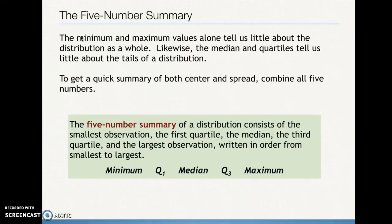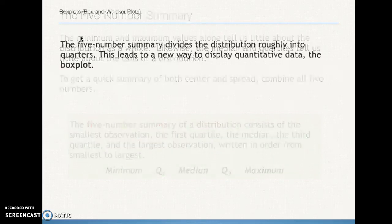That brings us to the five number summary, which is exactly what it sounds like — five numbers that describe a data set. We start with the median, Q1, and Q3 — that's three numbers. Adding the minimum and maximum gives us five numbers that provide a lot of information about the distribution of data. In order: the minimum, Q1, the median, Q3, and the maximum.